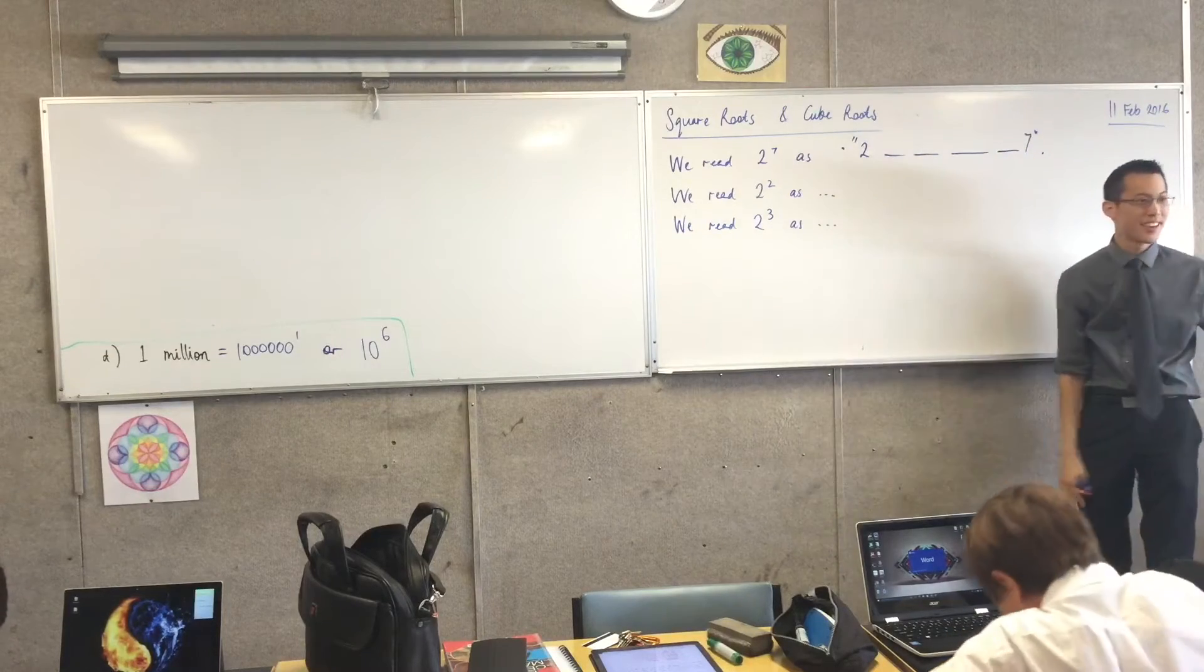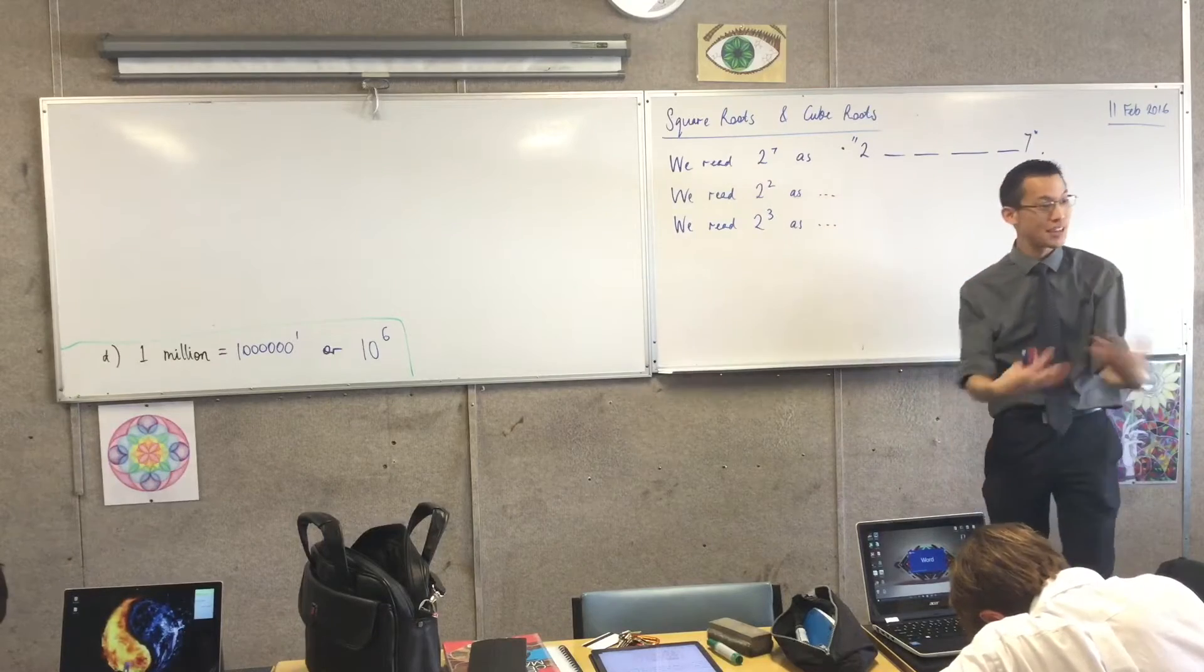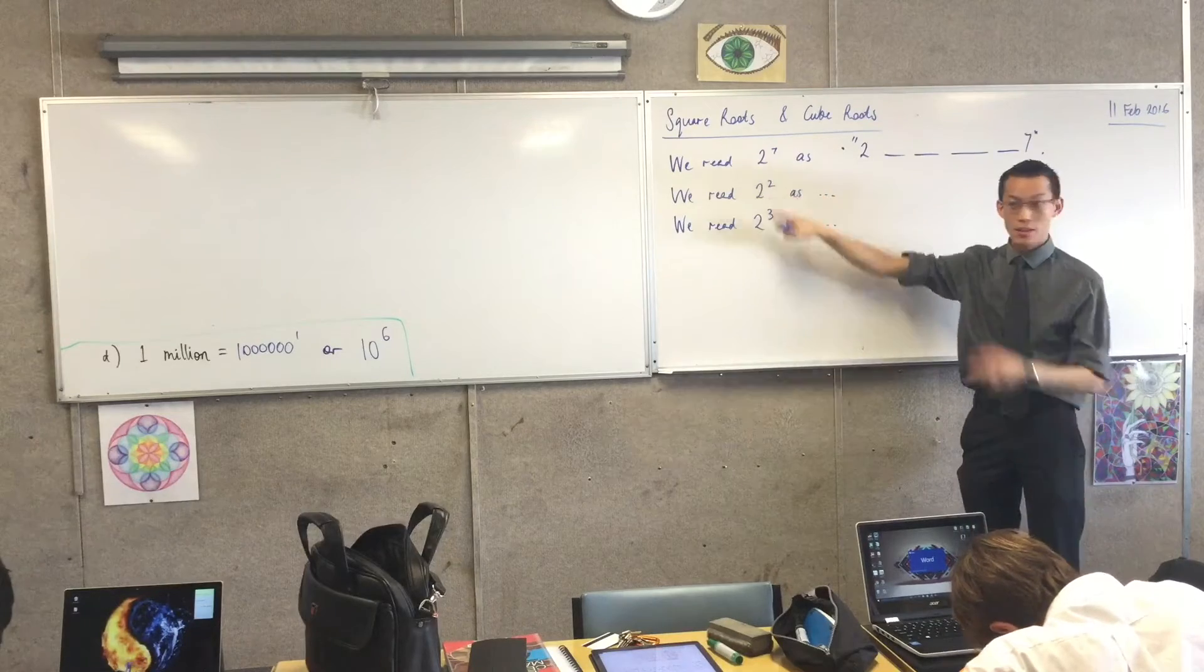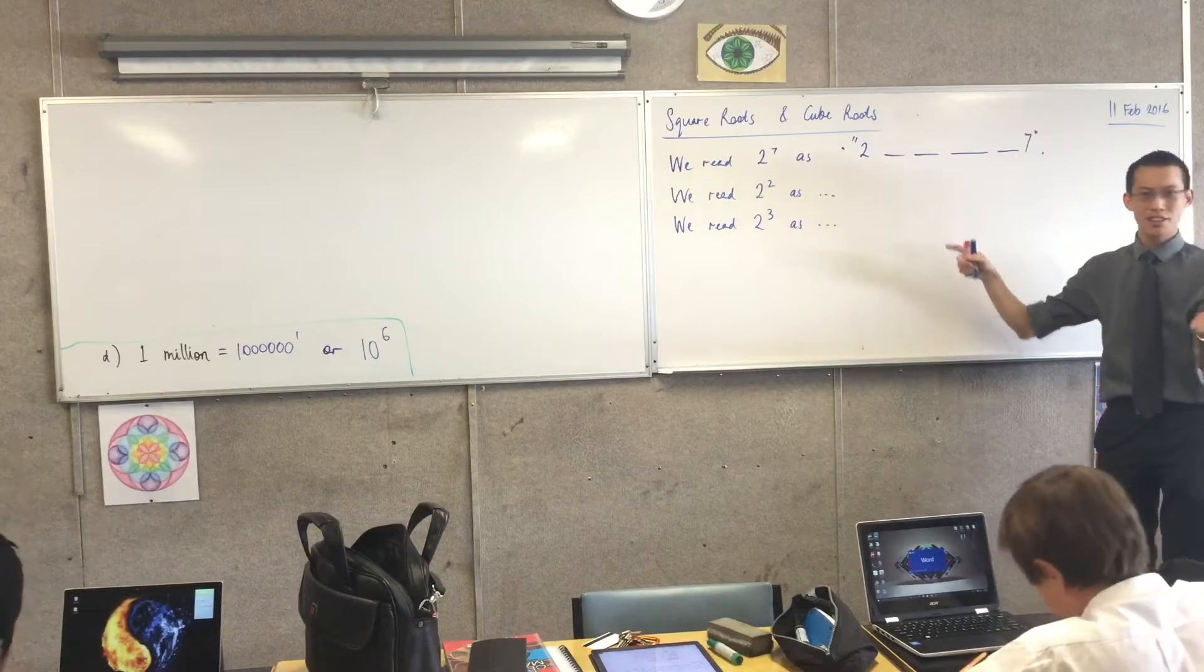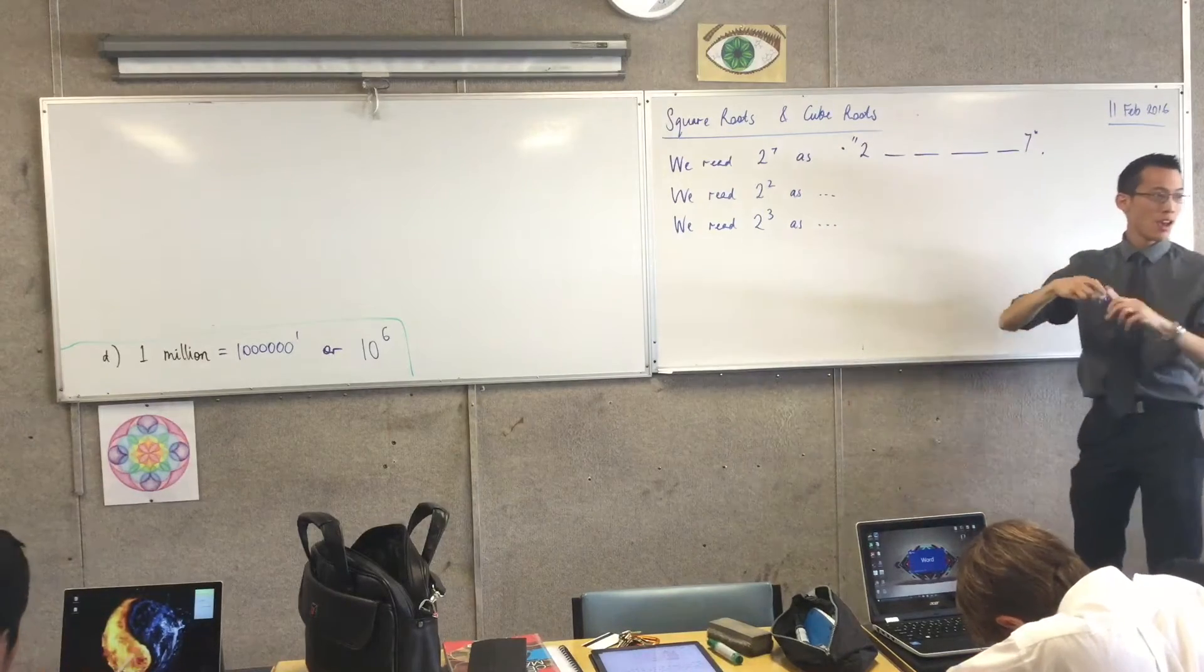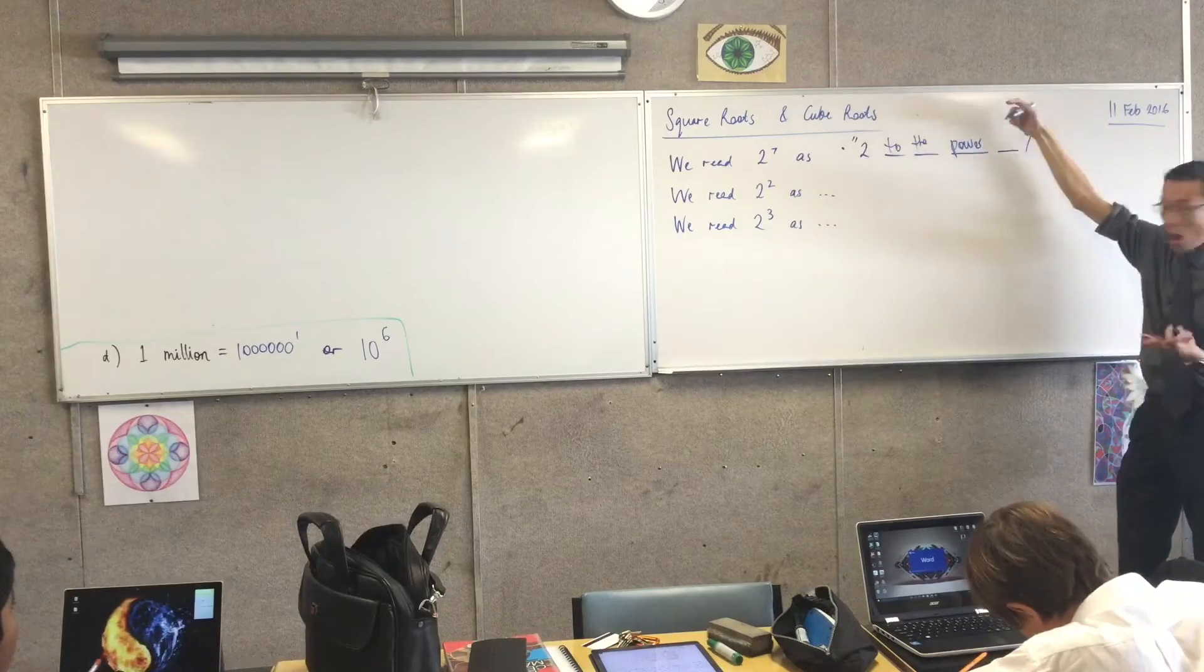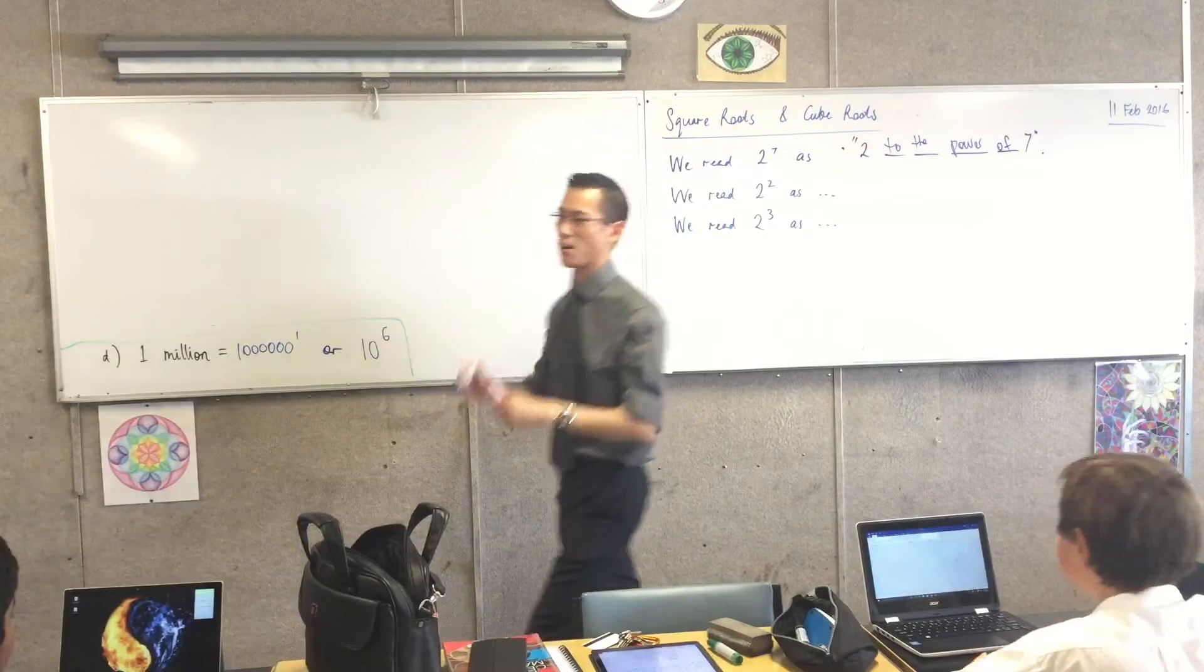The way we're going to enter into this new idea is to take something that we learned just now, or that you've demonstrated just now, which is that we read a number like this in the index form. We read that as, and you guys actually said the phrase quite a few times. How do we read it? How do we say it out?